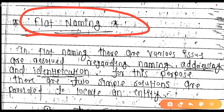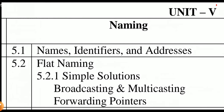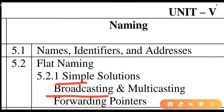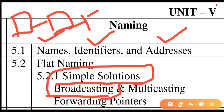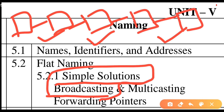Under flat naming, we have discussed naming, identifiers, and addresses. Here we need to understand — in order to locate something on a network, what kind of naming do we use? As we know, in distributed system computing, the network has many computers. All these computers are interconnected, and together they form a large network.